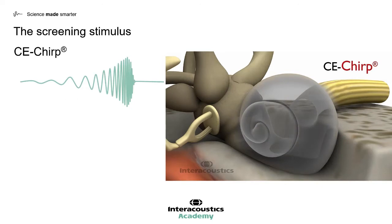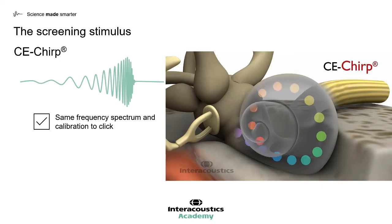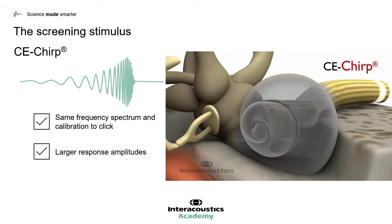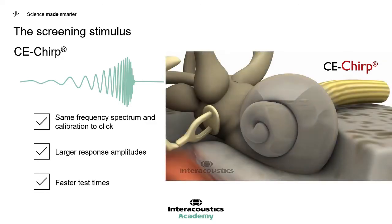A solution to the click stimulus has been found within the CE CHIRP. The CE CHIRP contains the same frequency spectrum and calibration as the click stimulus. However, it provides larger response amplitudes, and as a consequence provides faster test times.